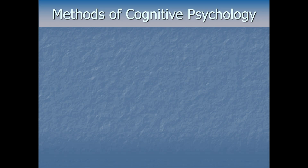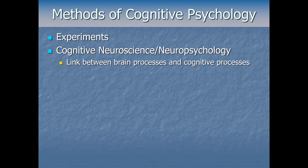As we'll see throughout this course, cognitive psychologists use a variety of research methods to answer questions about cognition. Most commonly you'll see lab-based experiments where a variable is manipulated — putting people in an experimental group and a control group — and then measuring some outcome variable. But many cognitive psychologists focus on techniques that involve measuring something about the brain, piecing together the link between brain processes and cognitive processes.